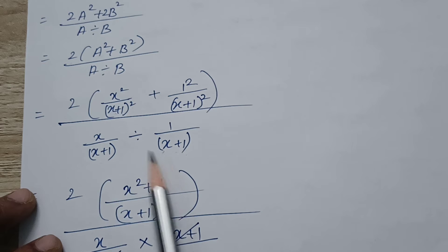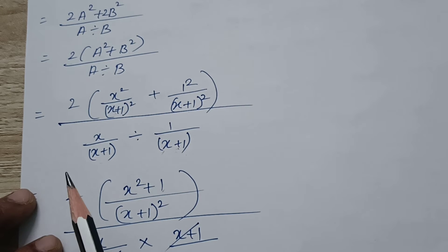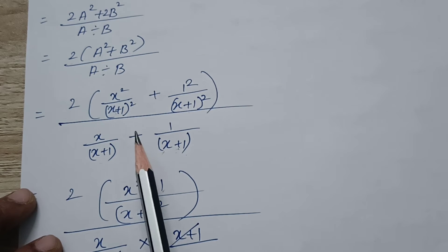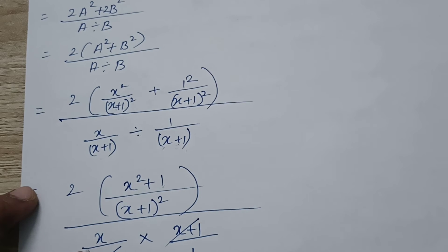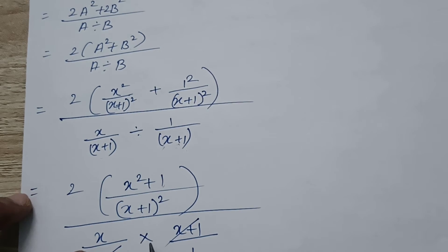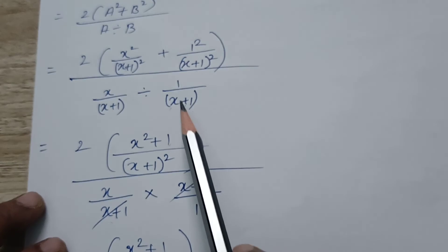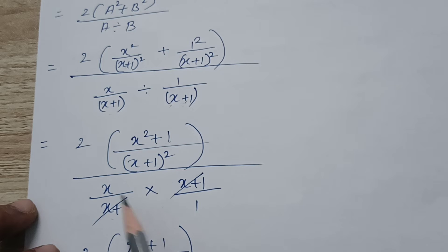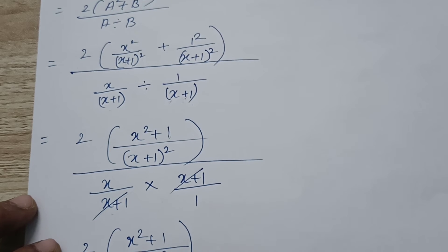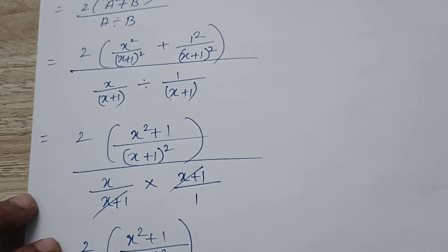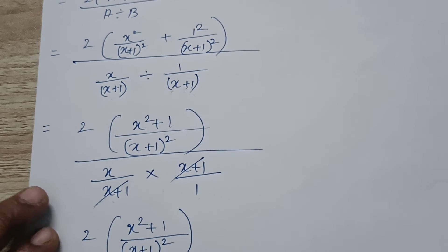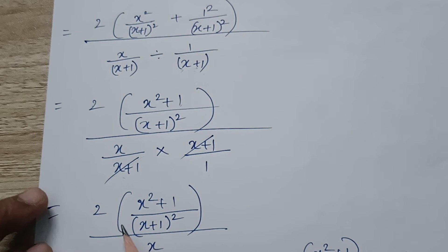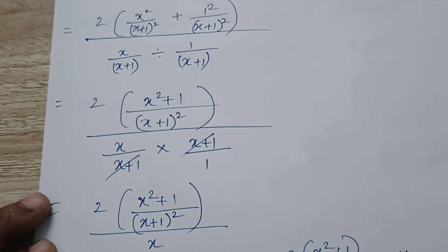Now apply the division of fraction method — same concept. Keep, Change, Flip: keep the first term, change division to multiplication, and flip the second fraction. So 1 by X plus 1 becomes X plus 1 by 1. After multiplication, the X plus 1 terms cancel, leaving X by 1, which is X. So we get 2 into X square plus 1 by X plus 1 the whole square, divided by X.